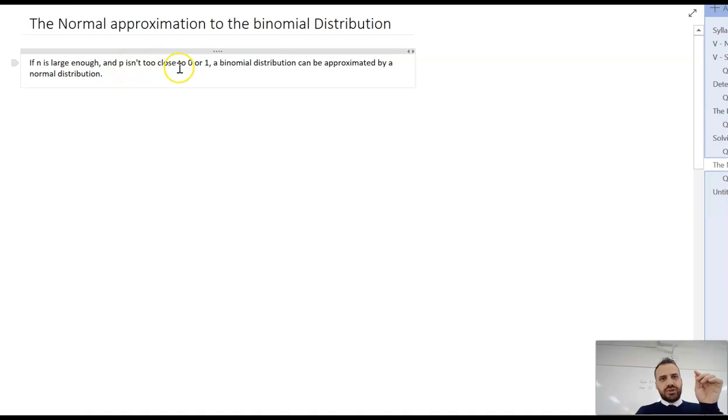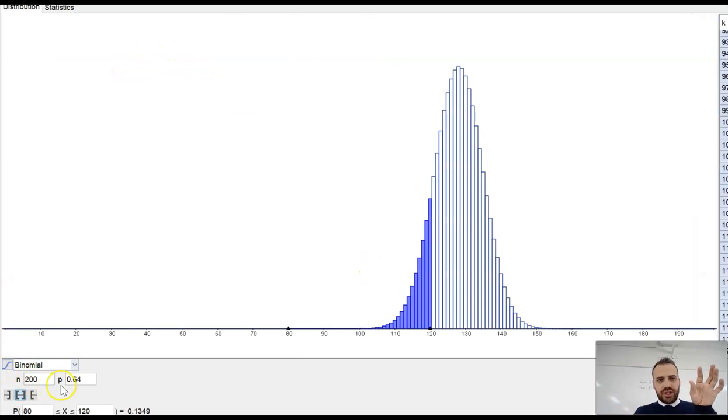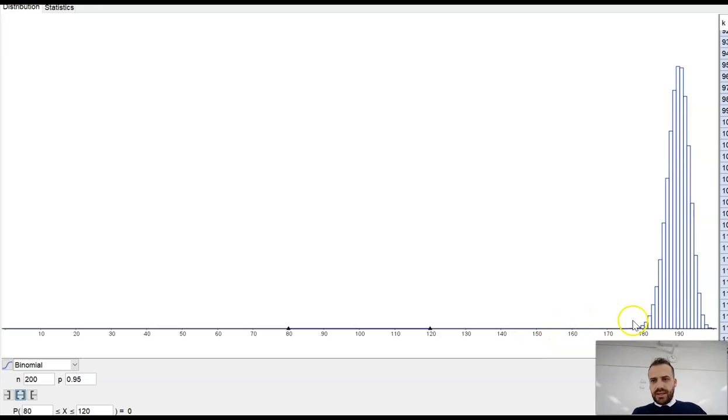Not too close to zero or one. Because if I go back there and change that probability of success to like 0.95, it stops being as symmetrical. You can see it doesn't really have that nice symmetry that our last one did.